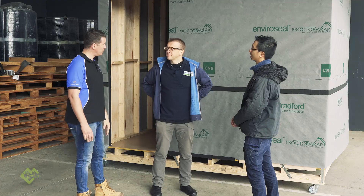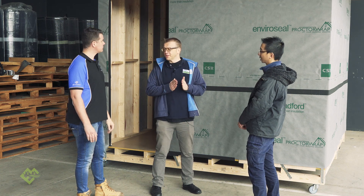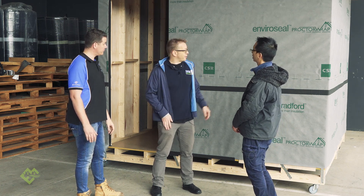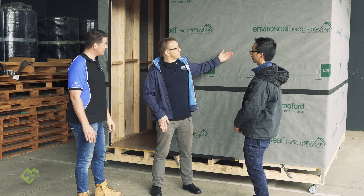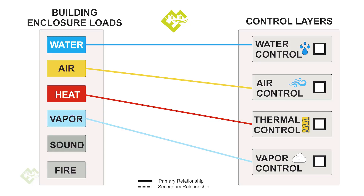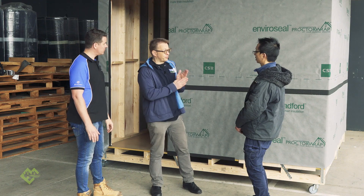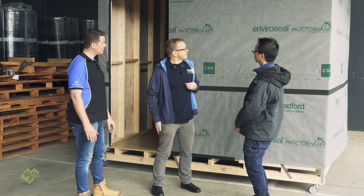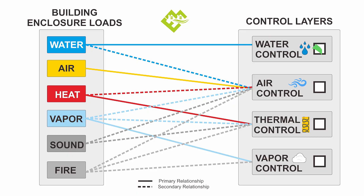Andy, what criteria does the EnviroSeal Proctorat product cover for building performance? When we talk about the building envelope and materials acting as control layers, we look at what control layer functions the membrane can offer. Primarily, you've got your temporary and long-term water control layer to stop water getting in. But also, because of the nature of the product, it provides an air control layer — you're not having air movement through the wrap, provided it's adequately taped and forms a complete air barrier. The other function is that, by being vapour-permeable, it allows vapour to escape through the membrane safely without causing damage within the structure or insulation. In a nutshell, the EnviroSeal Proctorat is a multi-function product, not a single function product.